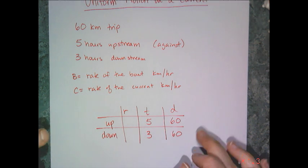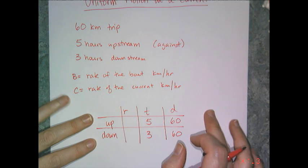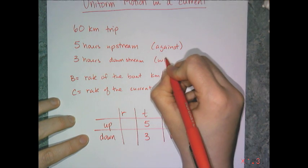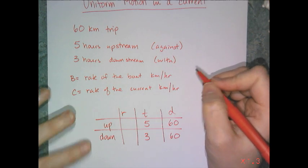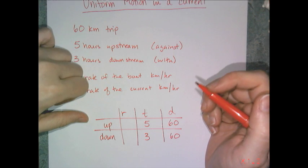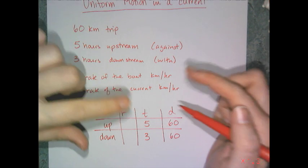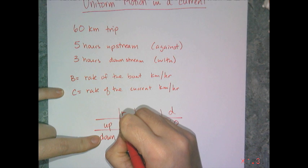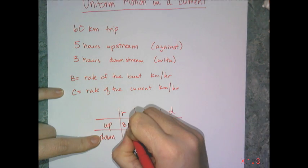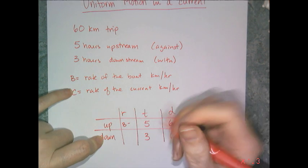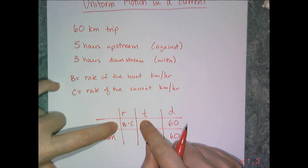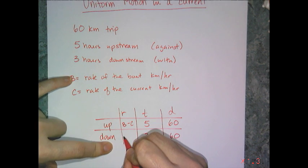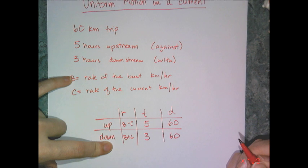So, remember, the whole premise behind uniform motion in a current is that if you are going with the current, the current helps you. So, it's a net addition. So, if you are going against the current, it's a subtraction. So, what you do is you take the boat's current, or boat's speed, and you subtract off the current's speed, and that will give you the net speed going upstream or against the current. And then you add for when the current helps you.